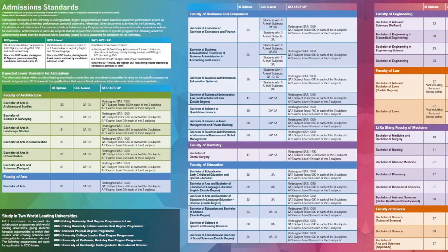How you should use this information is to guide your application. This is not an absolute score — there's no guarantee that achieving 31 in IB Diploma means you will be admitted to the Bachelor of Arts. What it tells you is that, based on data since 2016-2017, many successful applicants score 31 or above in IB Diploma, with admitted students ranging from 31 all the way to 44-45. Use this to determine whether you have the right academic credentials for the program you're applying to.